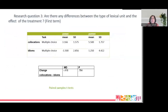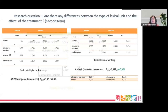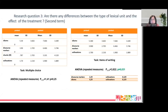Let us now look at question three. For the first term, two variables of change were created and a paired sample t-test was conducted. The differences between the magnitude of change of the two types of lexical combinations studied was not significant. In the second term, the repeated measures ANOVA for multiple choice did not yield a significant difference among the four types of lexical units. On the contrary, the repeated measures ANOVA for items of writing was statistically significant between discourse markers and collocations, and idioms and collocations. Therefore, items with collocations yielded a lesser gain than other kinds of lexical items — though this is not conclusive, and a larger study should be conducted.